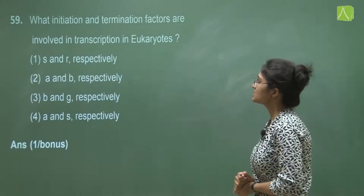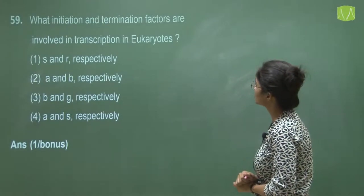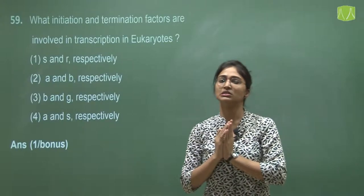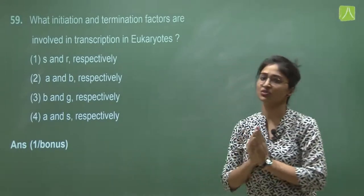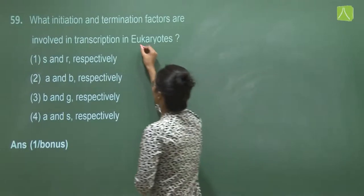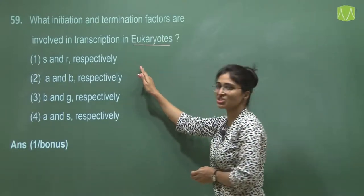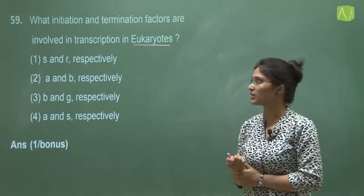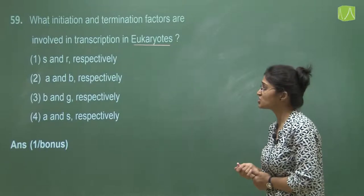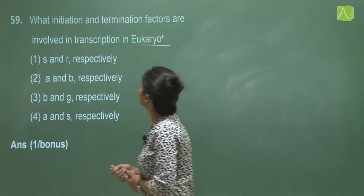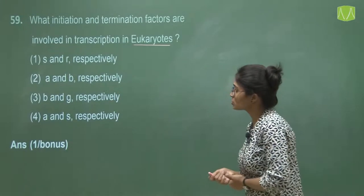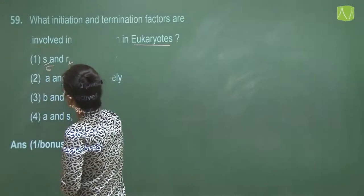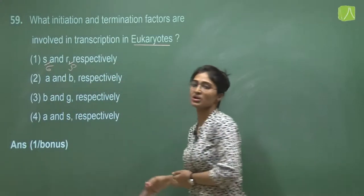Question 59 asks what initiation and termination factors are involved in transcription in eukaryotes. However, the factors given in the options are actually those of prokaryotes. For prokaryotes, the initiation factor is sigma and the termination factor is rho. So the answer based on prokaryote factors is sigma and rho. This question is considered a bonus question.